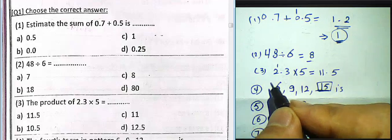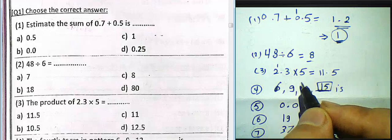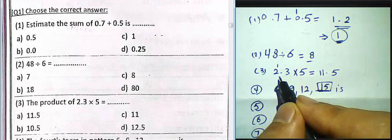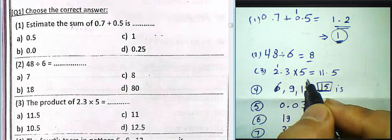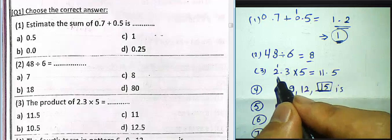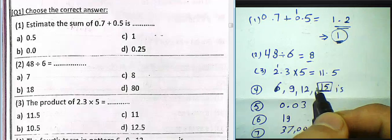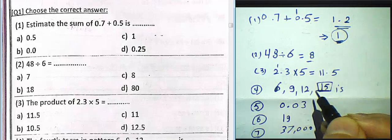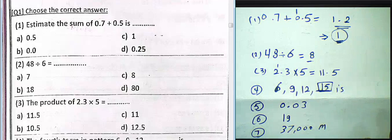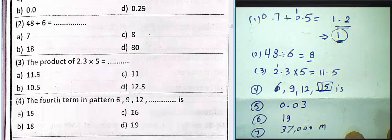Question 3: the product of 2.3 and 5. We calculate 2.3 multiplied by 5. 5 times 3 equals 15, write 5 and carry 1. Then 2 times 5 equals 10, plus 1 equals 11. The result is 11.5.